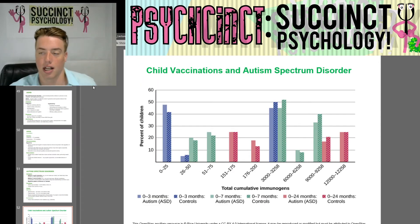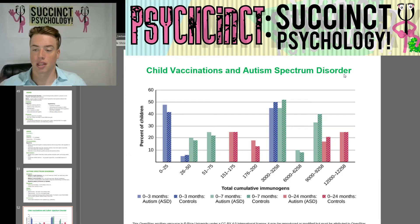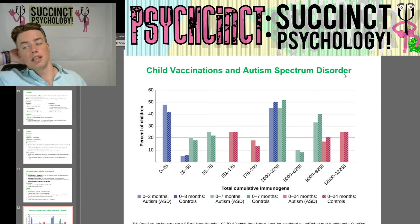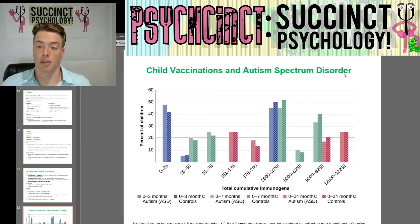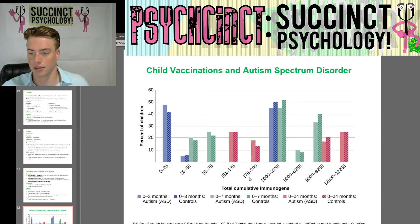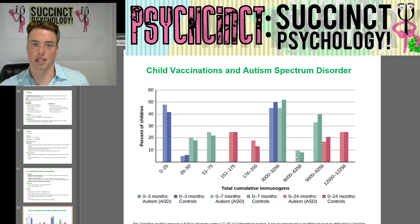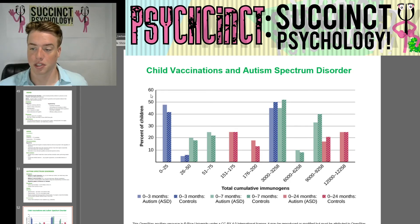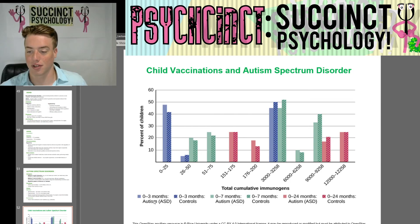The last slide covers child vaccinations and autism spectrum disorder. There was — and still somewhat is — a debate that vaccinating children before age three would cause them to develop autism. That has been proven incorrect. Numerous studies have been done and there is no causation; just because a child received a vaccine and then later developed autism does not establish causation — only correlation at most. A chart is shown with percent of children and total cumulative immunogens across different age groups for autism versus controls, which you can review for yourself.